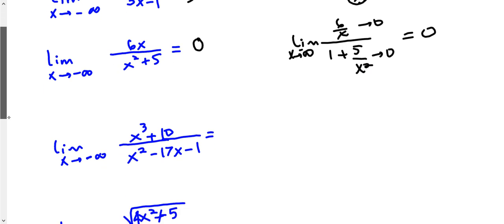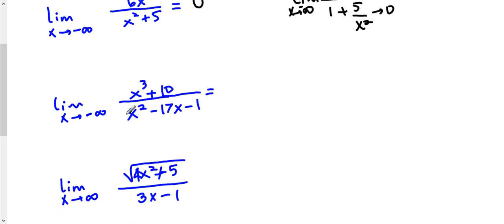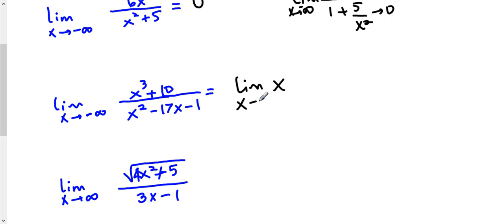What about when the degree of the top is higher than the bottom? This is when the answer might be plus or minus infinity. The suggestion is to analyze the leading terms from the top and bottom. So that's x cubed over x squared, which is x. This means the expression behaves the same way as the limit of x as x goes to negative infinity. If you substitute negative infinity in for x, the whole thing goes to negative infinity.